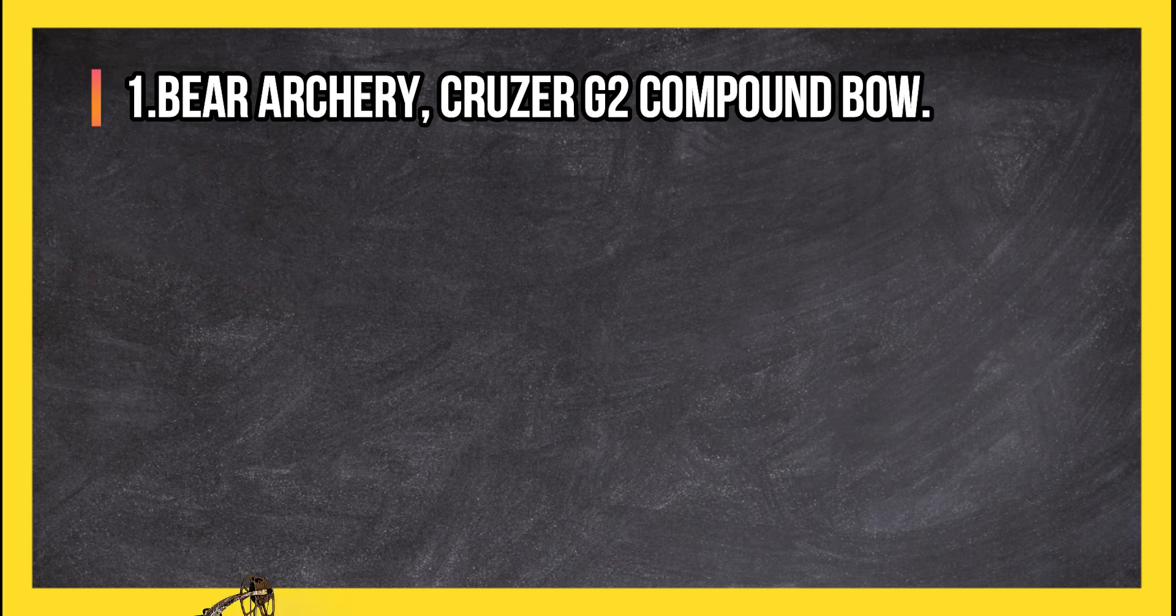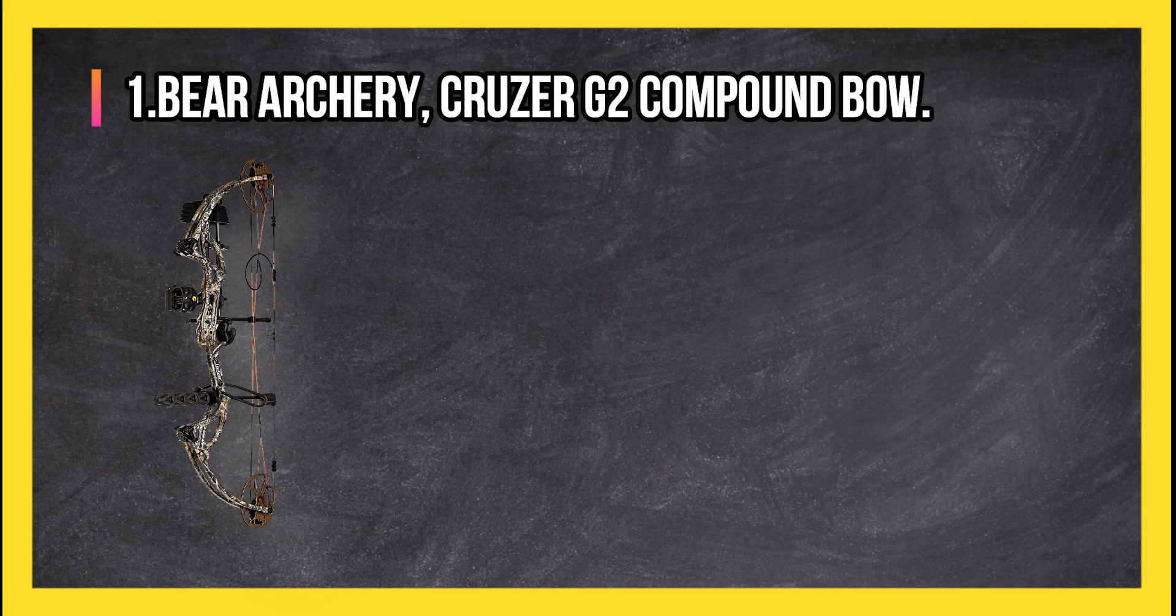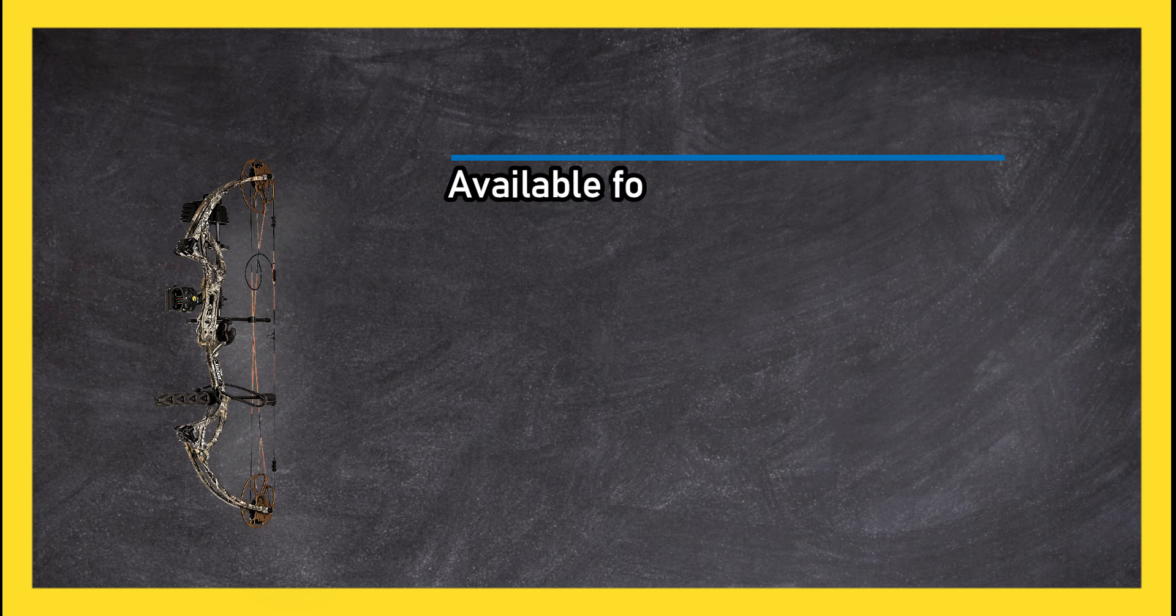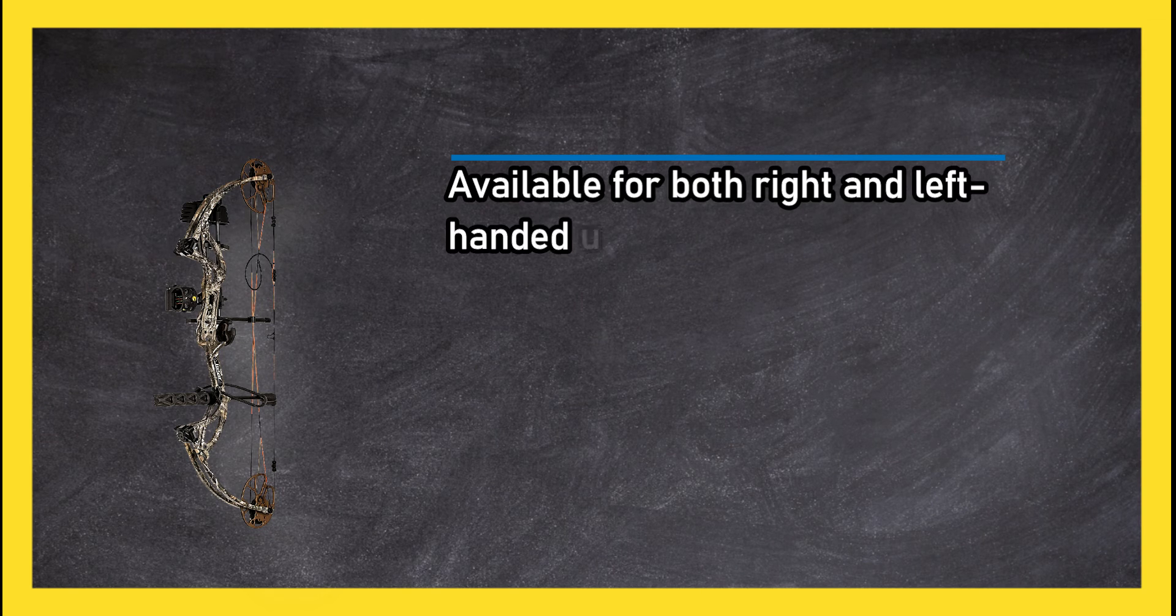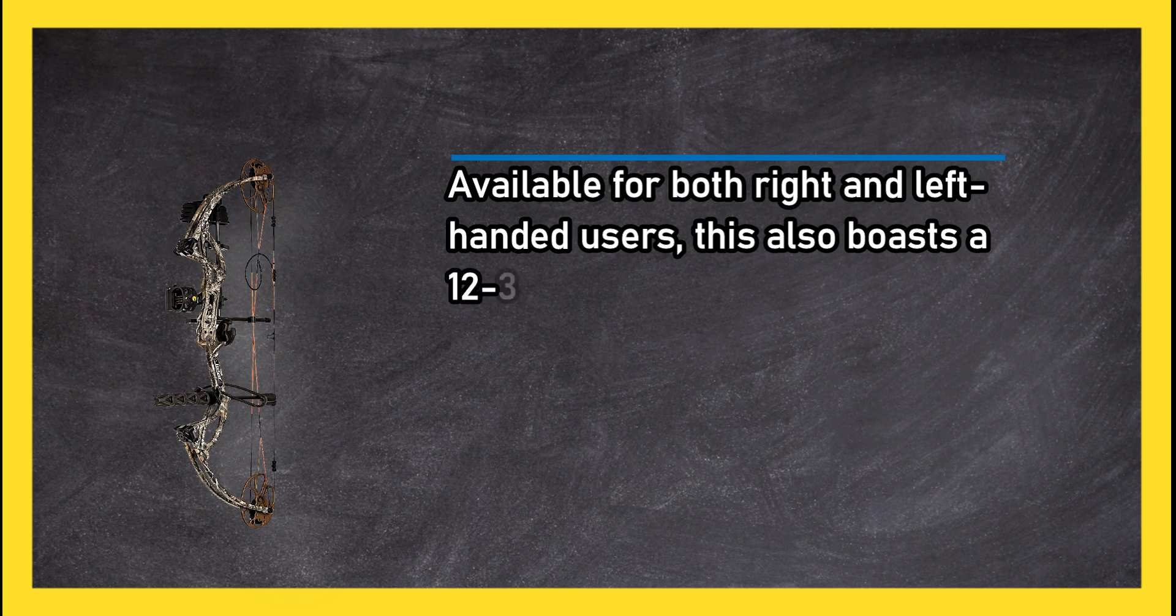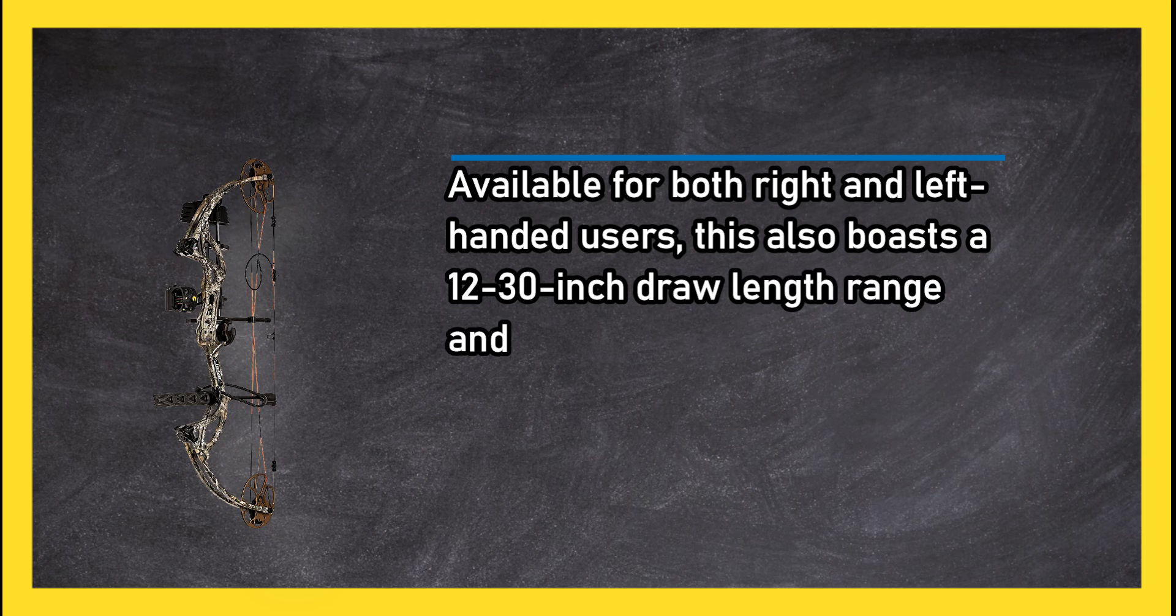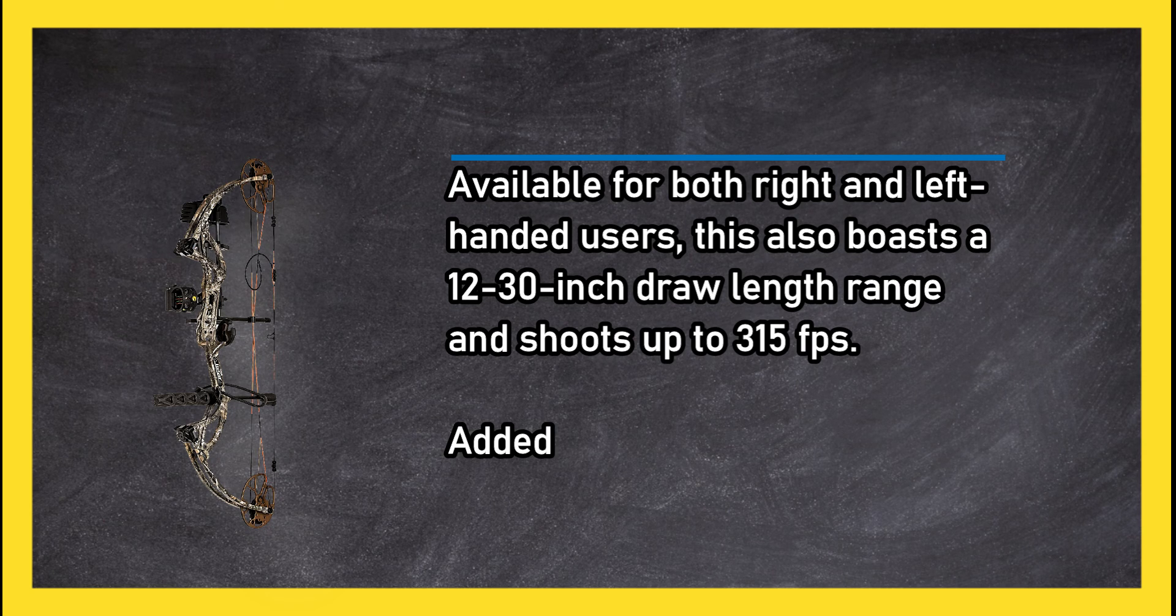At number 1, Bear Archery Cruzer G2 Compound Bow. Available for both right and left handed users, this also boasts a 12 to 30 inch draw length range and shoots up to 315 fps.